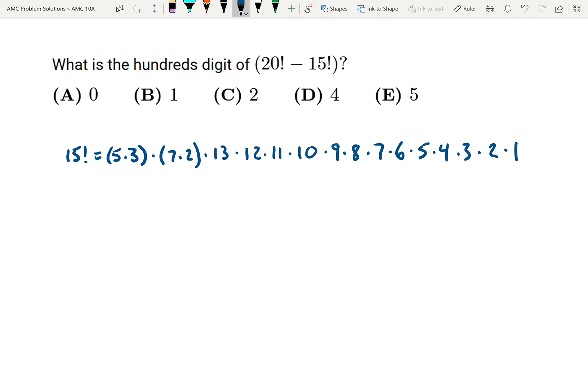Here I'm trying to find what is the hundreds digit of 20 factorial minus 15 factorial. One thing I know before I even do this problem is that if a number is divisible by a thousand, then the hundreds digit is going to be zero. So I'm going to see if I can prove that 20 factorial minus 15 factorial is divisible by a thousand.